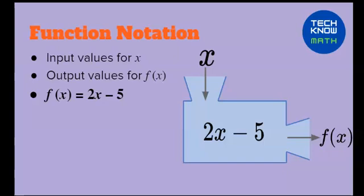In function notation, the same is true. We will input values for x, and it will output values for f of x. f of x will equal 2x minus 5. We still are multiplying our variable by 2 and subtracting 5, but instead of using a second variable, we use the same variable with the function notation f.